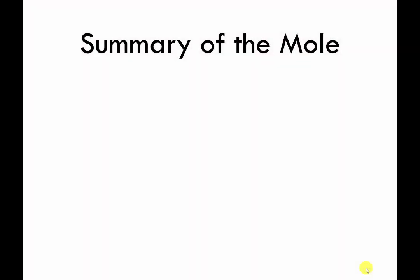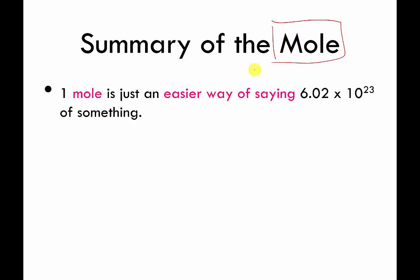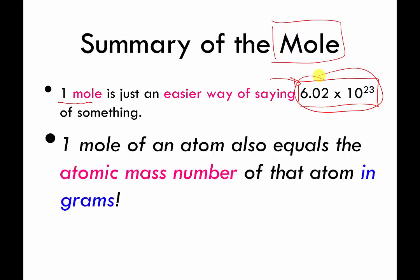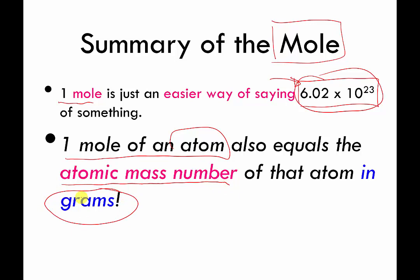I want to start this unit by reviewing what was covered in the old unit, because moles and things related to moles are often difficult for many students. One mole of something is just an easier way of saying one group of this many things. It's almost always reserved for talking about atoms and molecules, because that's about how many you need before you can actually start to see and weigh them. One mole of a particular atom — you can figure out how much it weighs by looking at the average atomic mass unit and changing the unit to grams.